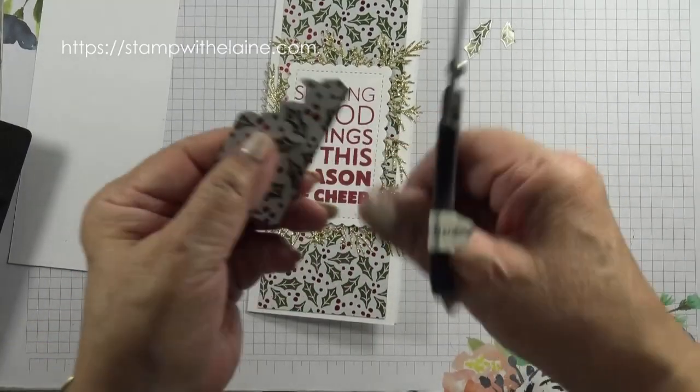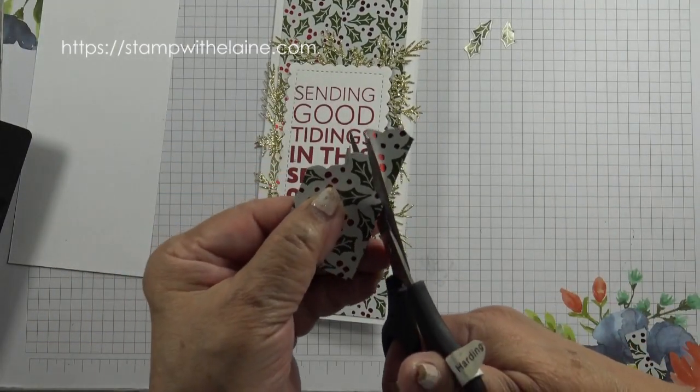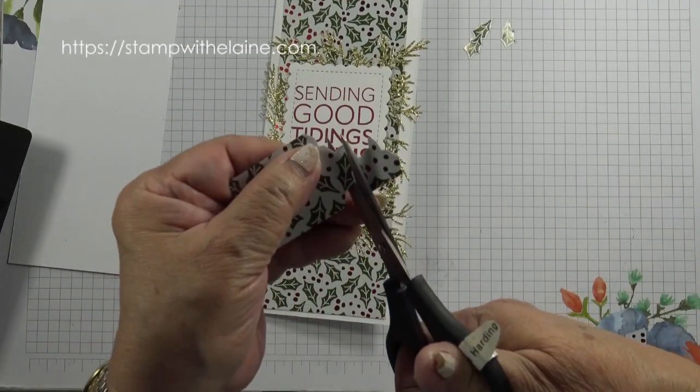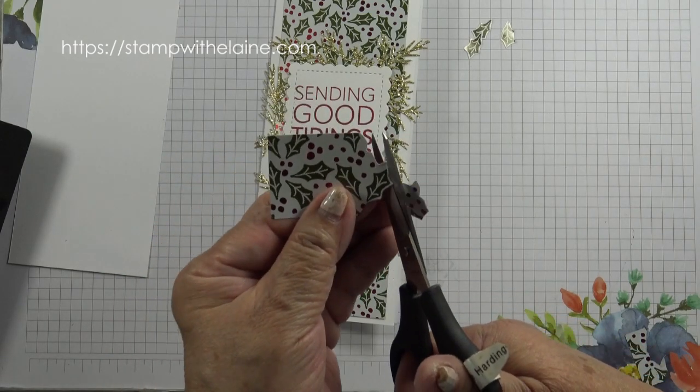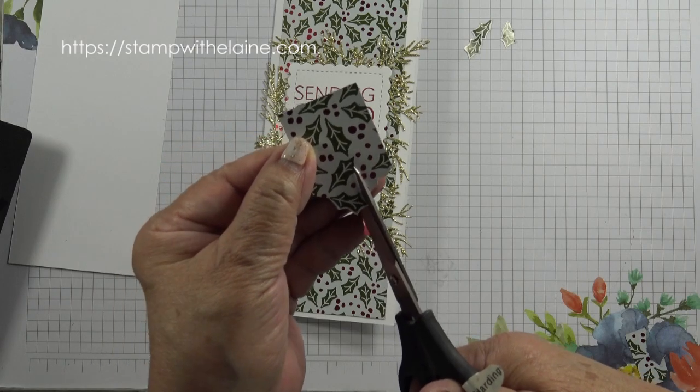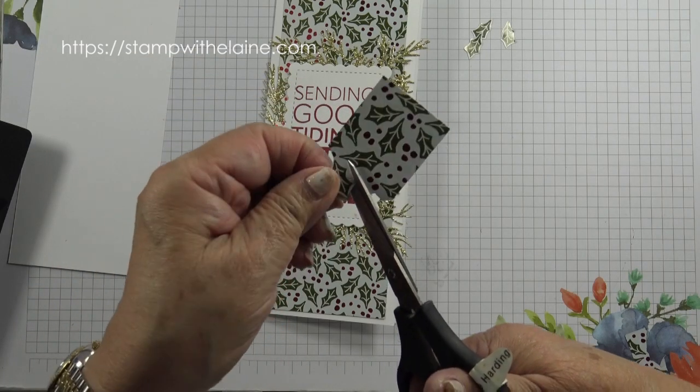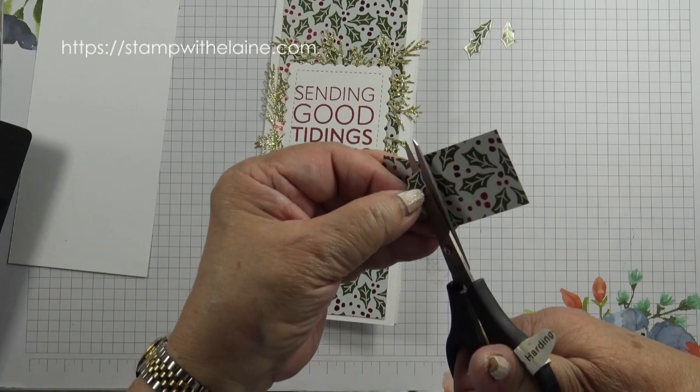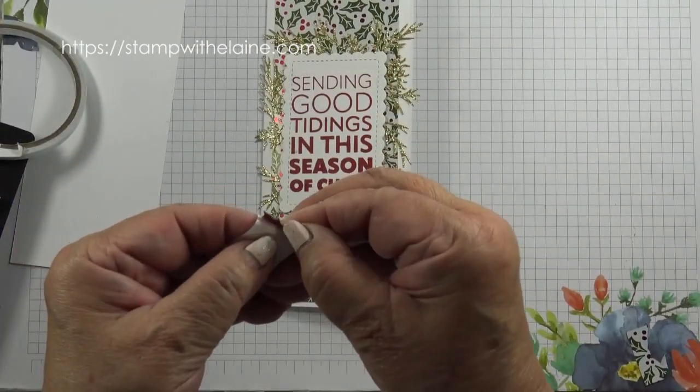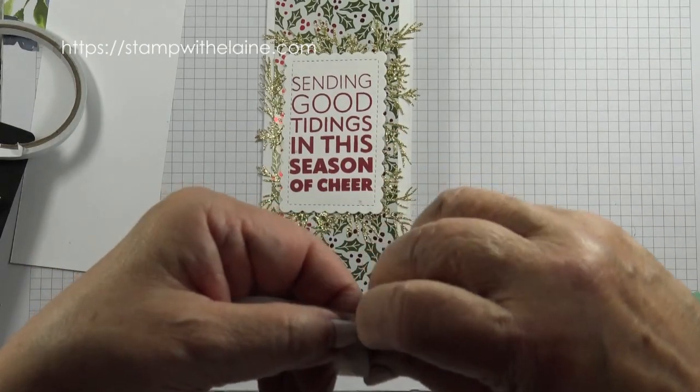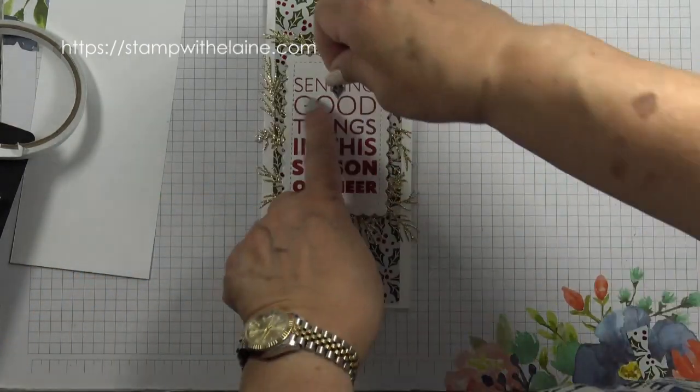Remember the leftover? We'll cut out four holly leaves from here and they're fairly easy to cut. Just angle your scissors at a 45 degree angle and move the paper, not the scissors.